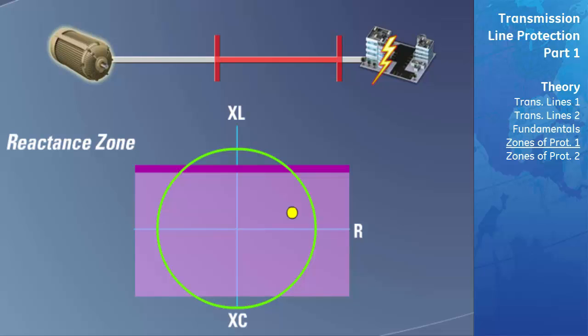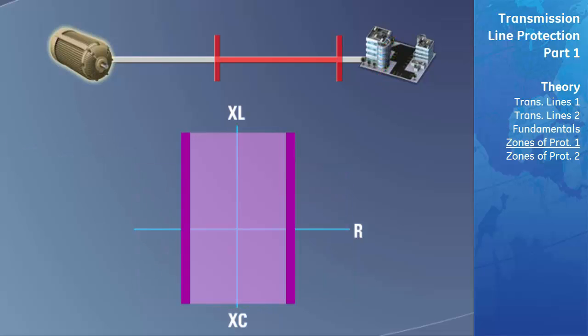The next zone of protection we will look at is a resistance zone. This type of zone is used to detect when the impedance of the fault has a very high inductive component in it. If the fault does have a high inductive impedance, this indicates that there is very little or no resistive load at the end of the transmission line and it is likely that the fault is located on the transmission line. This type of zone is usually never used to trip a transmission line on its own but is normally used to supervise another distance zone of protection.